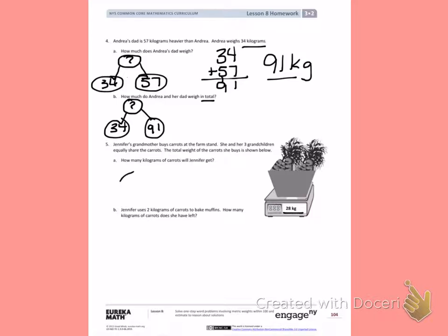Their total is 28 kilograms. In the problem, it's telling us Jennifer and her three grandchildren will share. So that means together there are four of them. So four people are sharing the carrots. So we can count by fours until we figure out how many each person is getting.